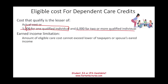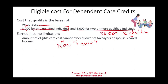The earned income limitation means the amount of eligible care costs cannot exceed the lower of the taxpayer's or spouse's earned income. For example, if you paid $4,000 for two children, the husband earns $38,000, and the wife earns only $2,000, the qualified expenses are limited to $2,000 — the lower of the two earned incomes. It doesn't make sense to pay $4,000 for childcare when you're only earning $2,000, so the cost is capped at your earned income.